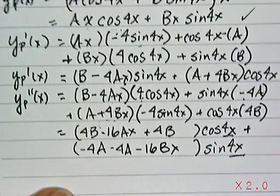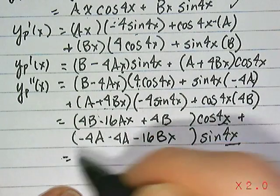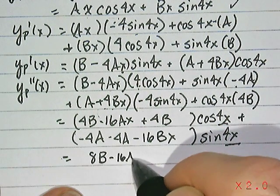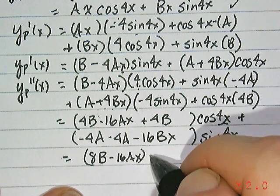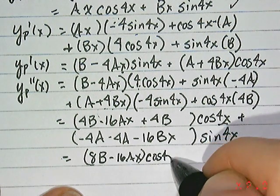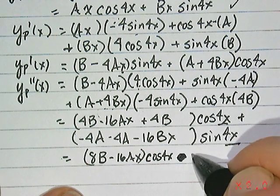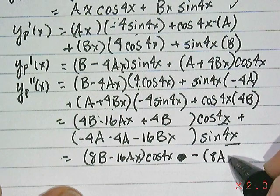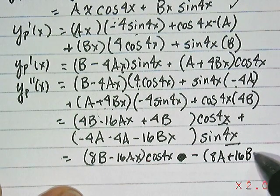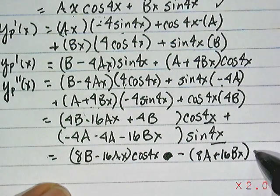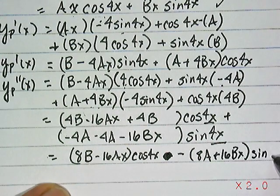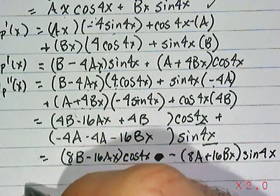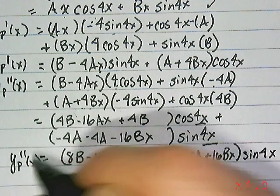Now, let's clean up inside those parentheses. What we'll end up with is 8b minus 16ax quantity times cosine 4x. Excuse me. I'm going to do this. Minus, we're going to pull that minus sign out. 8a plus 16bx. And all that will be multiplied by sine 4x. And this is y double prime of x.